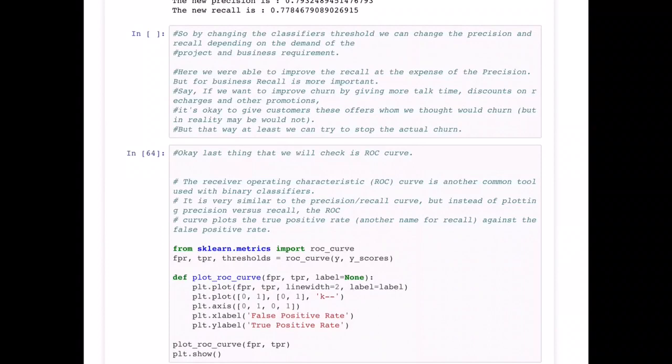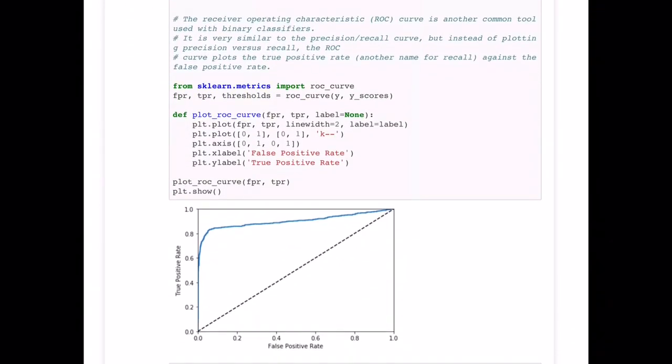One last thing that we will check is the ROC curve. It's also known as the Receiver Operating Characteristic curve, and is just another tool typically used for binary classifiers. It is very similar to the precision and recall curve, but instead of plotting the precision versus recall, it is going to plot the true positive rate, also known as recall, against the false positive rate. We can similarly plot this, and sklearn.metrics gives us that calculation as well.